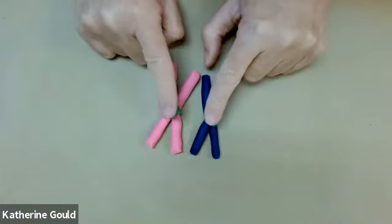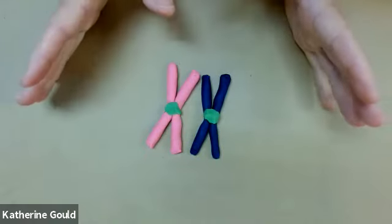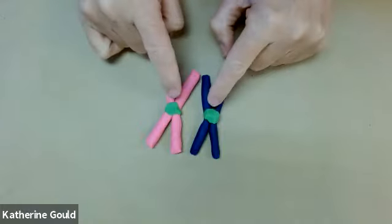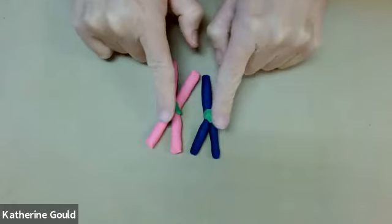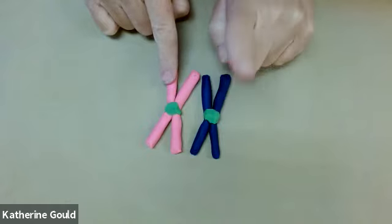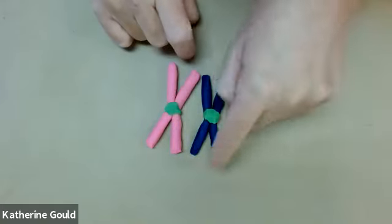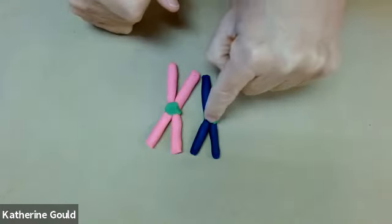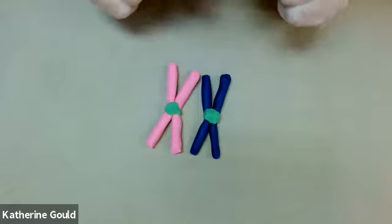So here I have two homologous chromosomes. They've both duplicated their DNA already in S phase of the cell cycle. We have two sister chromatids for each chromosome. The reason these two are different colors is that this one is the paternal chromosome and this is the maternal chromosome. The organism whose body we're in, this chromosome came from their father, this chromosome came from their mother.